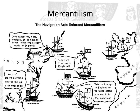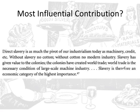You can ask yourself: what was the most influential contribution to this mercantilist system? Was it land? Was it labor? Consider this quote: 'Direct slavery is as much the pivot of our industrialism today as machinery, credit, et cetera. Without slavery, no cotton. Without cotton, no modern industry. Slavery has given value to the colonies. The colonies have created world trade. World trade is the necessary condition of large-scale machine industry. Slavery is therefore an economic category of the highest importance.' That argument places slavery at the centrality of this mercantilist system.